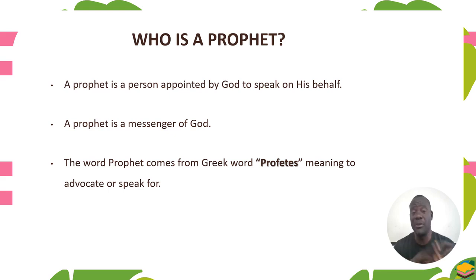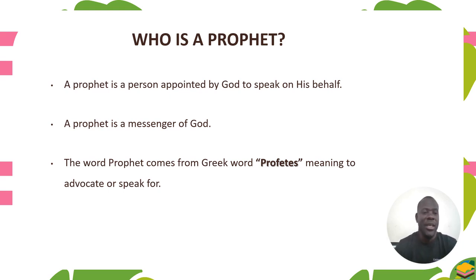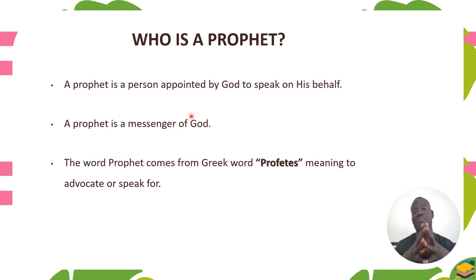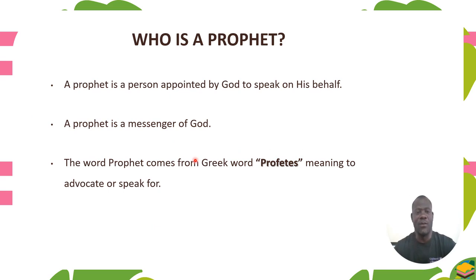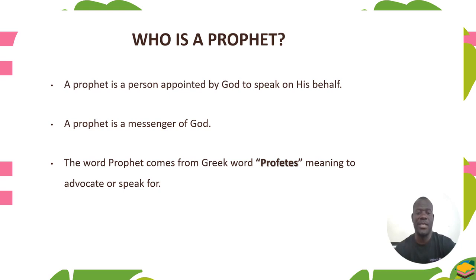We need first to know who a prophet is before we come to the book of Isaiah. A prophet is a person appointed by God to speak on his behalf — someone who carries the message of God. A prophet is a messenger of God. The word 'prophet' comes from the Greek word 'prophetess,' meaning to advocate or to speak — to preach.